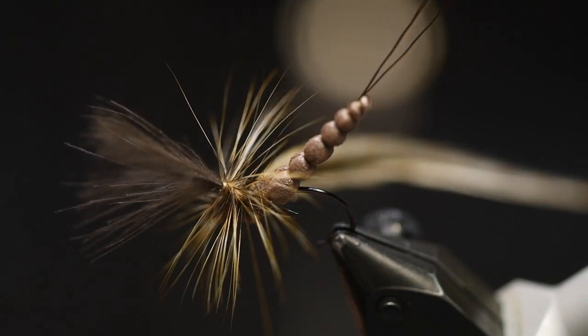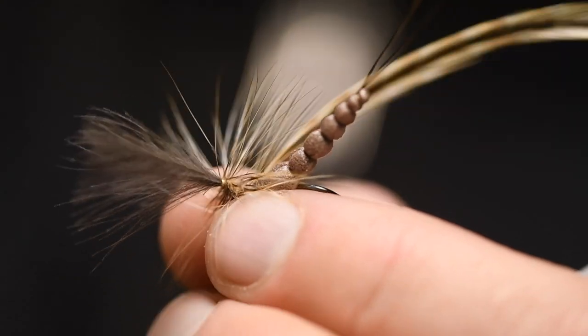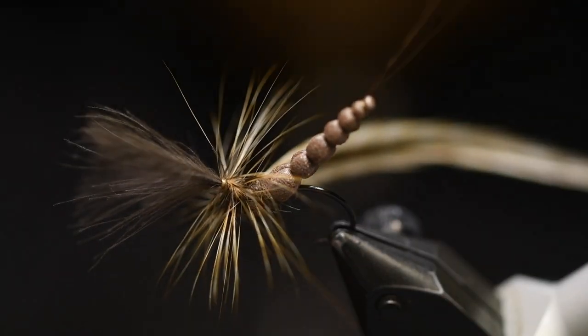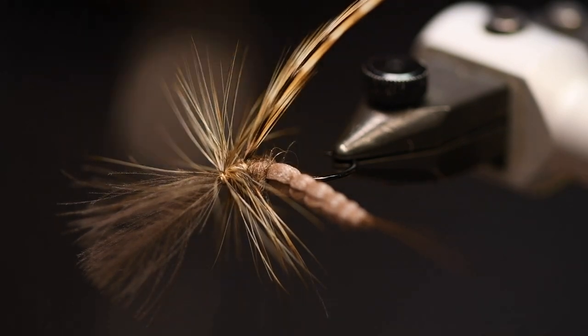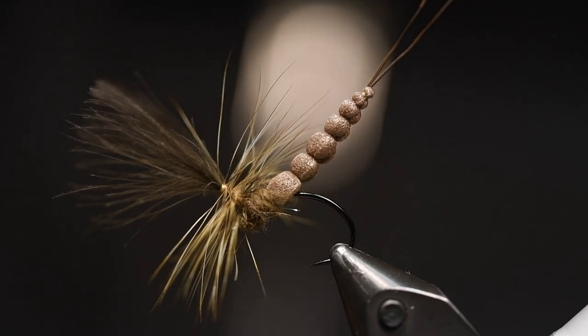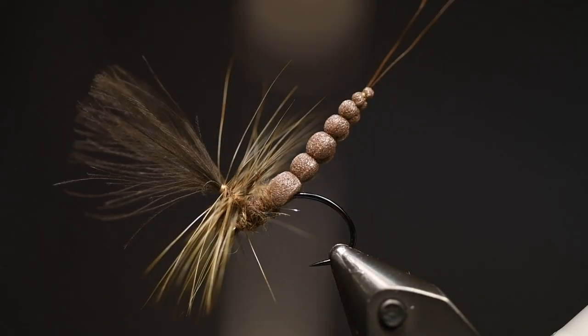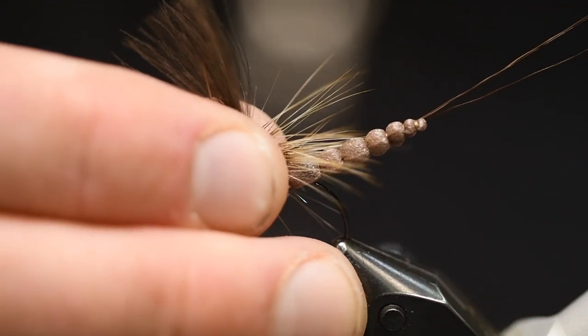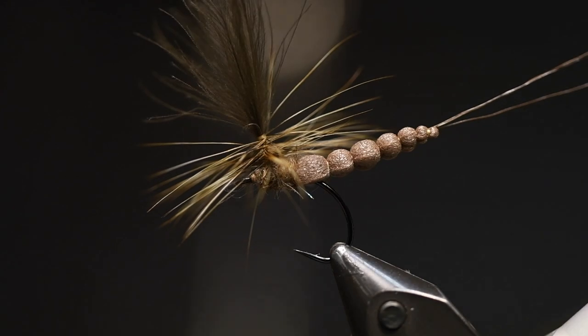And I make a few larger half hitch over the base. So there you have a really nice Vulgata Dunn.